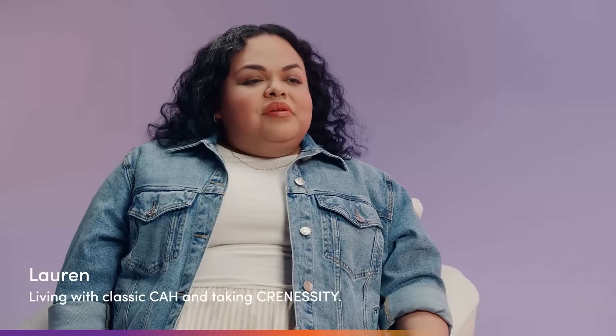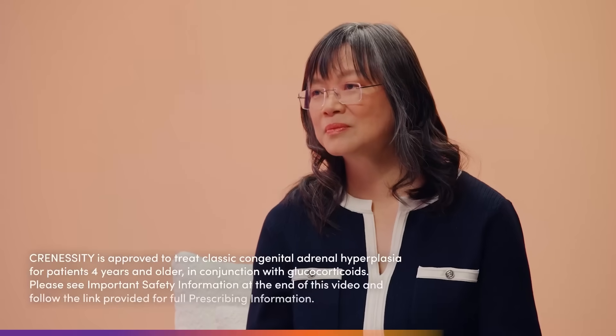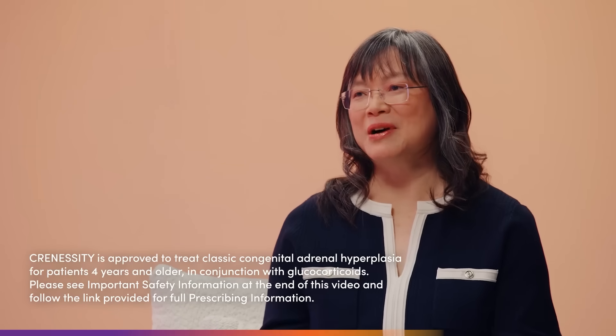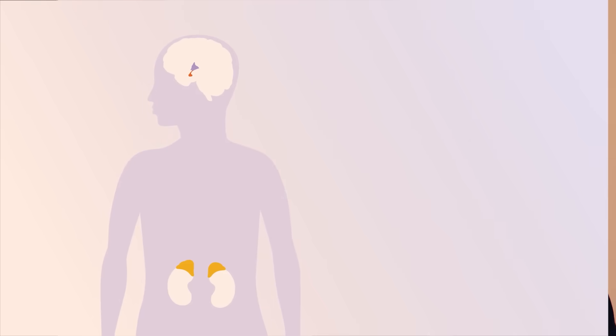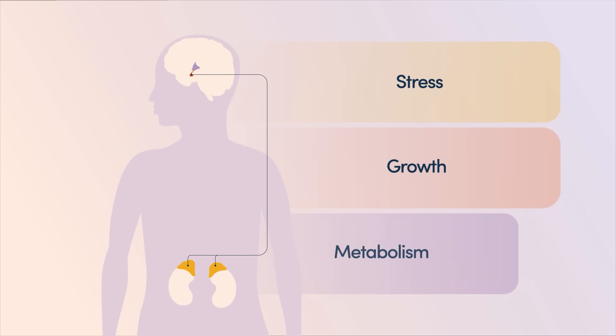We've been talking a lot about CAH and how chronicity works. I want more detail on how CAH affects the body. Chronicity works by impacting the HPA axis. The HPA axis is the hypothalamic pituitary adrenal axis, and it makes all kinds of hormones — signals that tell your body how to deal with stress, how to grow, and it also deals with your metabolism.